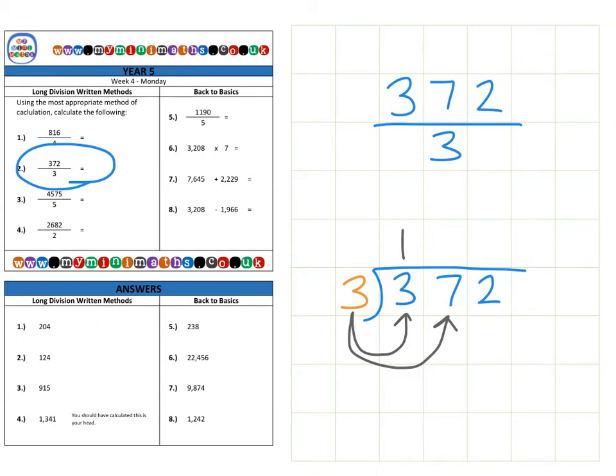So it's going to be two - threes are six. And then I've got one left over from that seven, so I'm going to bring that and carry it over to the next value. And threes into twelve go four, for a final answer of 124.